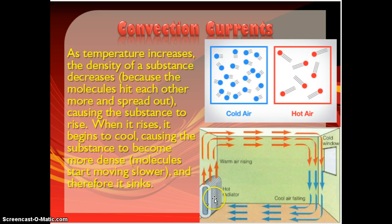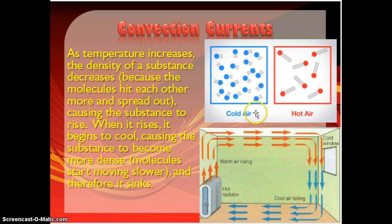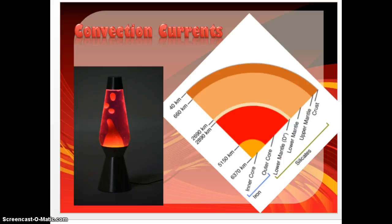As air heats up, it starts to rise because it's getting less dense, and less dense things tend to rise. Once it gets up high, it eventually starts to cool off because there's a cooler air mass up there, or you're getting up towards space. So it starts to cool, gets more dense again, and because it's more dense, it falls. It creates this continuous current of getting less dense and rising as it's warming, and cooling, getting more dense, and falling — that's your convection current.